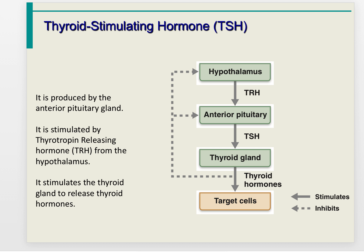Thyroid-stimulating hormone is also produced by the anterior pituitary gland, stimulated by thyrotropin-releasing hormone from the hypothalamus, and it stimulates the thyroid gland to release thyroid hormones. Negative feedback occurs when thyroid hormones feed back on the anterior pituitary to reduce TSH production, or influence the hypothalamus to reduce TRH production, preventing overproduction of thyroid hormone.